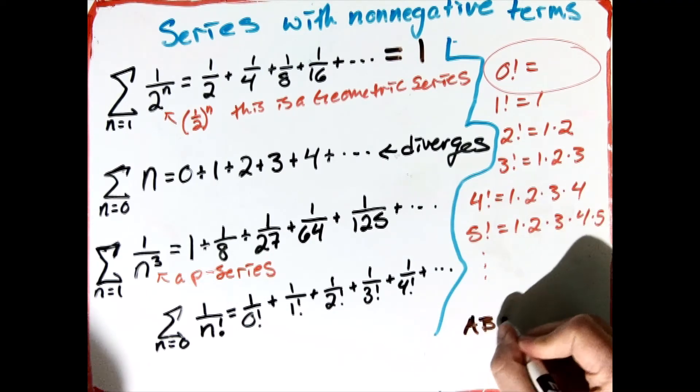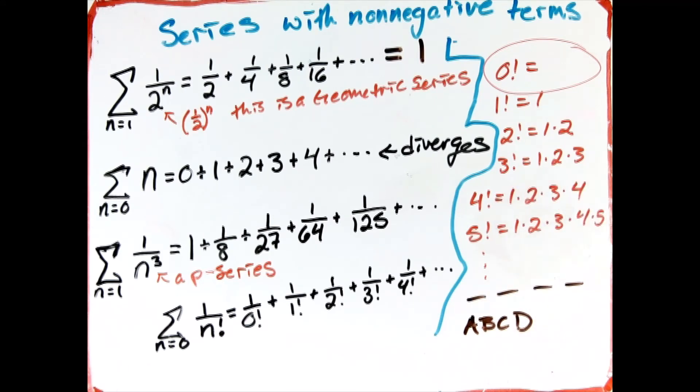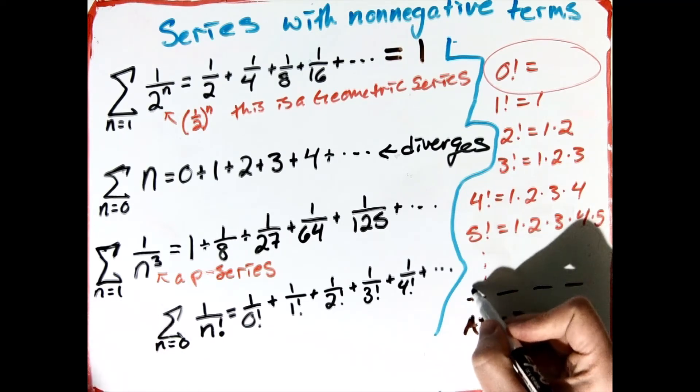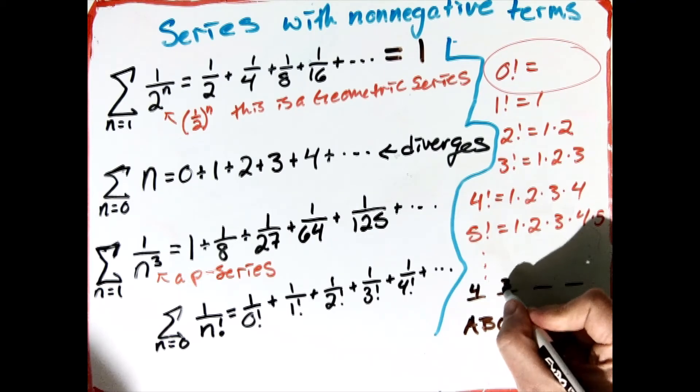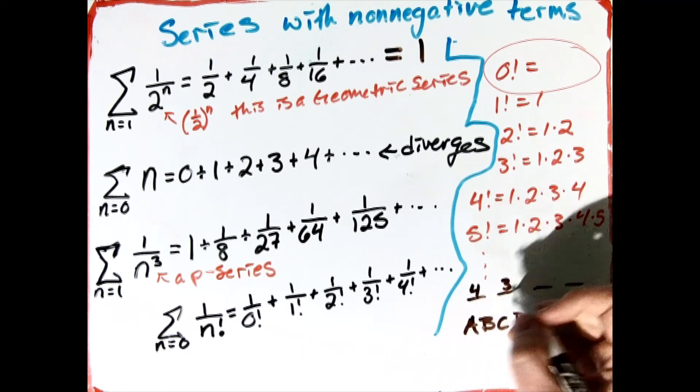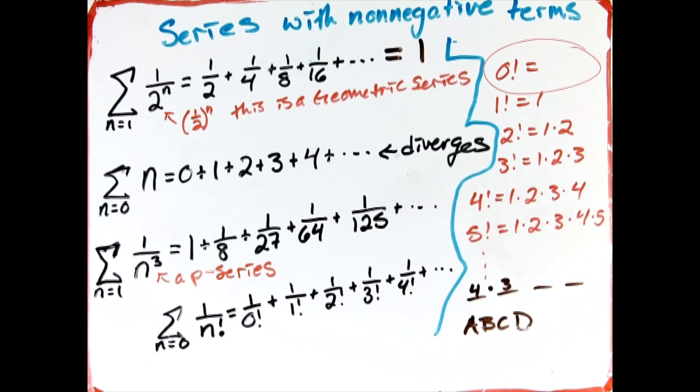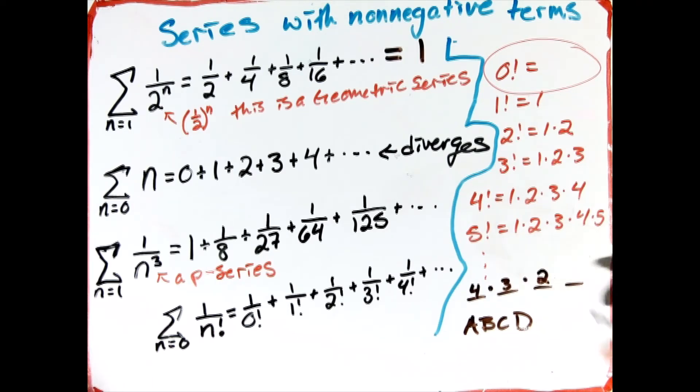So the question then becomes, what is 0 factorial? And so the way that you define a factorial is how many different ways there are to permute that many objects. So for example with 4, so if I have A, B, C, and D, and I want to put them in a specific order, how many different ways are there to take these letters and put them in an order?